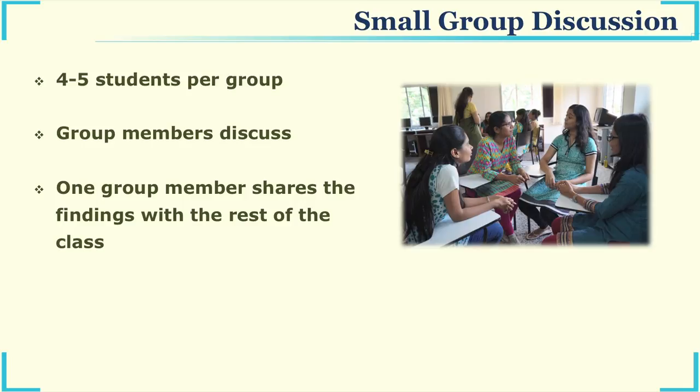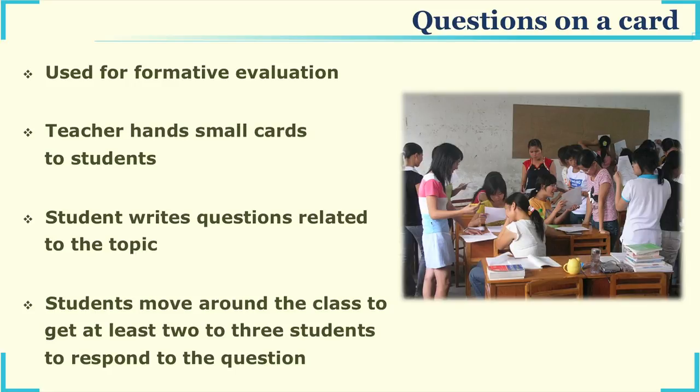Strategy one: small group discussion. A small group could be four to five members. Have all members sit together at an allocated place and give them a topic to discuss. One person functions as the secretary or recorder, keeping note of all points discussed. At the end of the discussion, the reporter shares the group's discussion with the entire class. It is a simple, economical technique that can be used in any classroom for any subject.